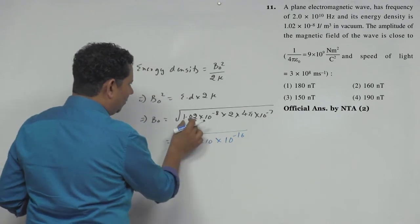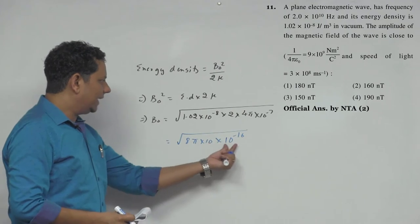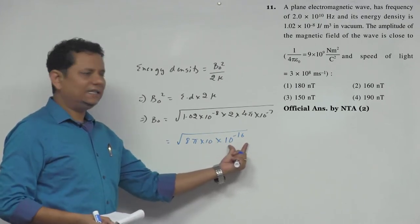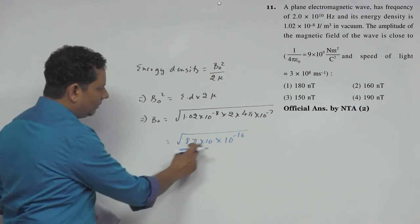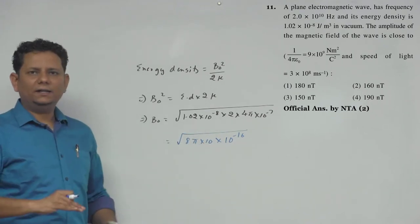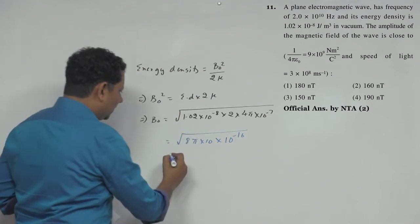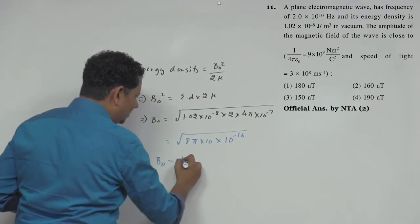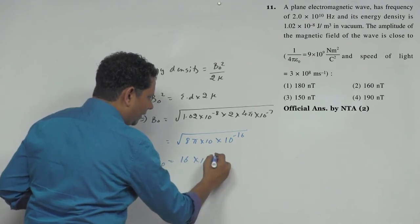1.02 is approximately equal to 1, so under root we have 10 to the power minus 16. This becomes 80 multiplied by pi. 80 times 3.14 is around 250. When we take under root, approximate value is 16 multiplied by 10 to the power minus 8 tesla,